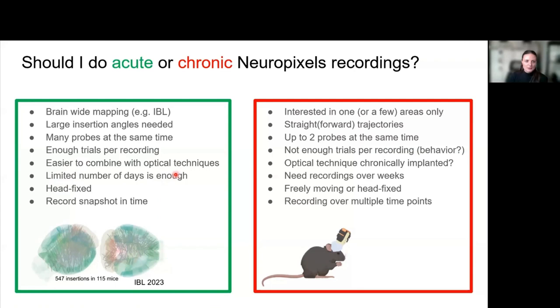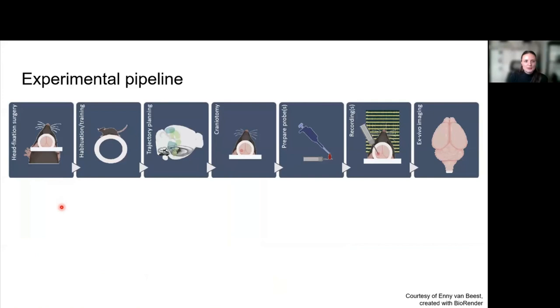Acute recordings are typically easier to combine with optical techniques unless you can chronically implant these optical techniques as well. Acute only works if a limited number of days is enough to record because the craniotomy might get a bit worse over time. It only works if you want to do head-fixed recordings, whereas with chronic you can do either freely moving or head-fixed. If you want to do a snapshot in time rather than record for multiple time steps, for example over learning, you cannot do that with acute recordings from the same neurons, or even in the same mouse is tricky.